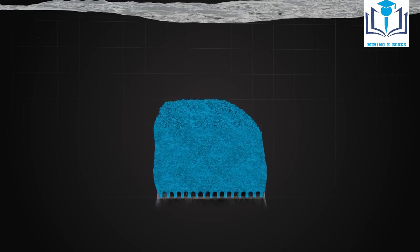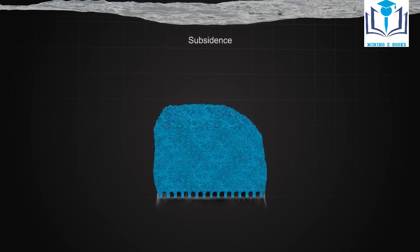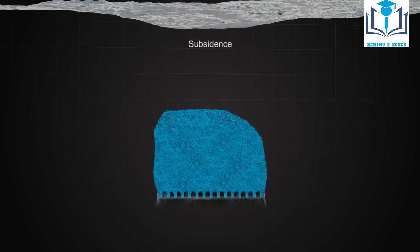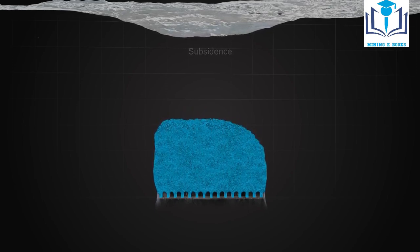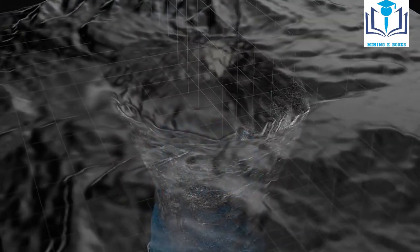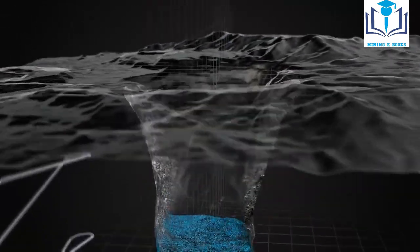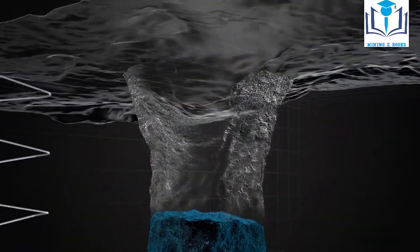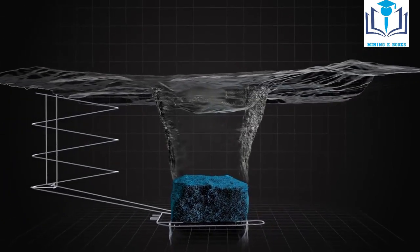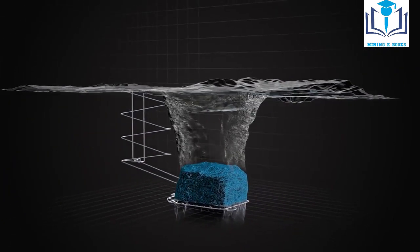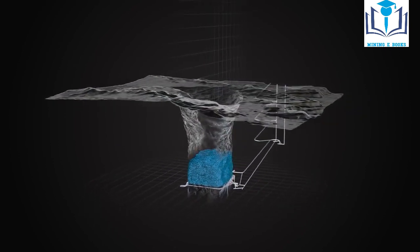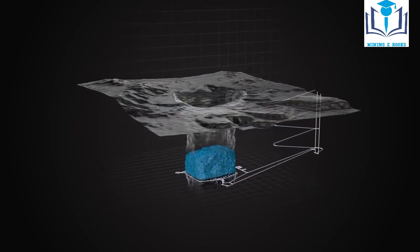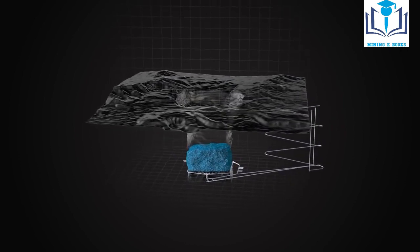The extraction of ore will sooner or later cause the surrounding rock to cave, resulting in subsidence on the surface. Provided the rock breaks successfully and the ore can be extracted evenly at desired draw points, block caving is a high productivity method with low operating cost that allows a high degree of mechanization and capability of automation.